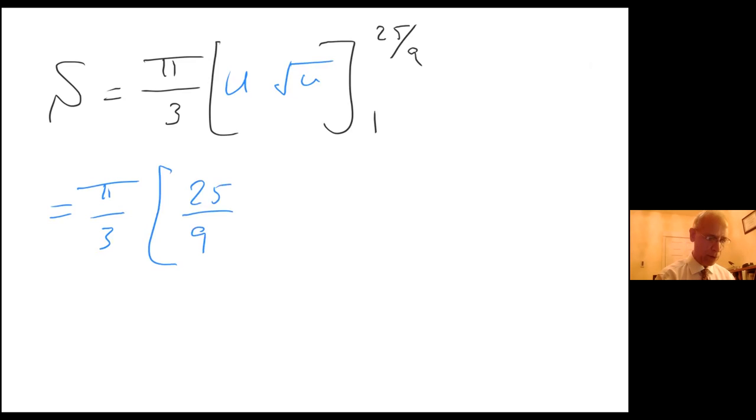Square root of 25 over 9 is 5 there, and then minus when I plug in 1, I just get a 1. And then I get π over 3 times 125 over 27 minus 1.